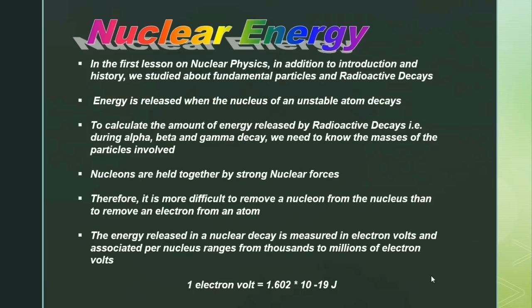In the first lesson on nuclear physics, in addition to introduction and history, we studied about fundamental particles and radioactive decays. Energy is released when the nucleus of an unstable atom decays. To calculate the amount of energy released during alpha, beta, and gamma decay, we need to know the masses of the particles involved.